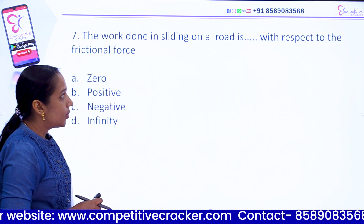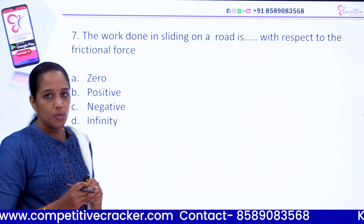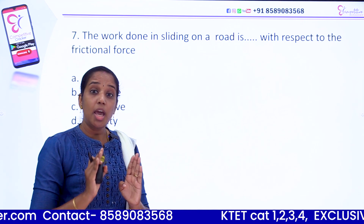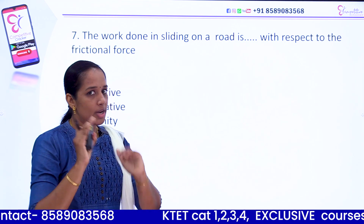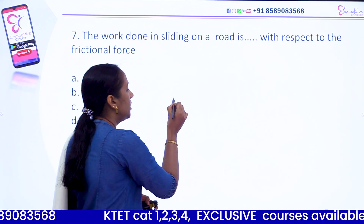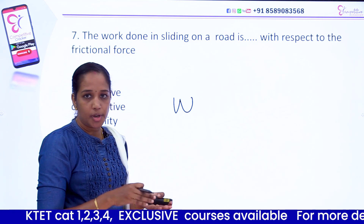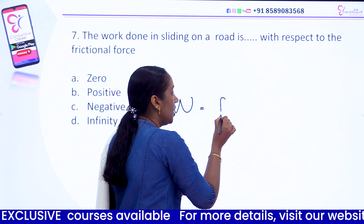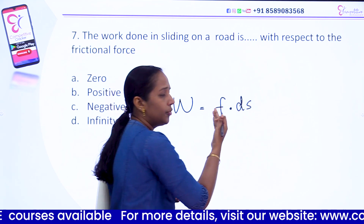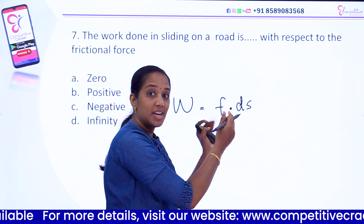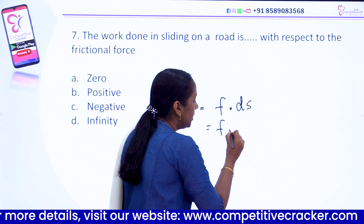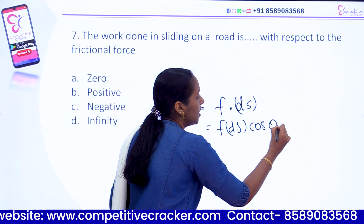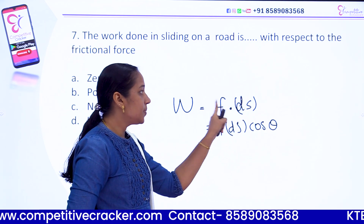Question number 7. The work done in sliding on a road is what, with respect to the frictional force? Work done is defined as W = F · ds · cosθ, where theta is the angle between the displacement and the force. Work can be positive, negative, or zero.